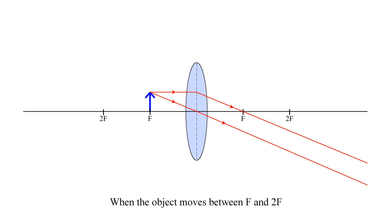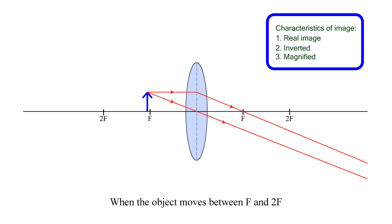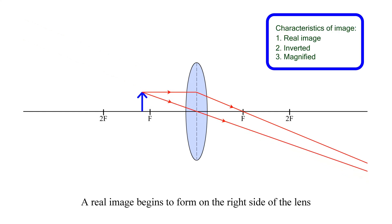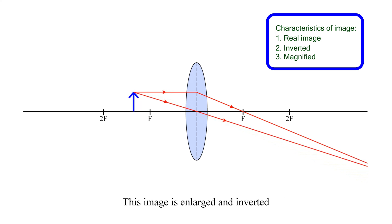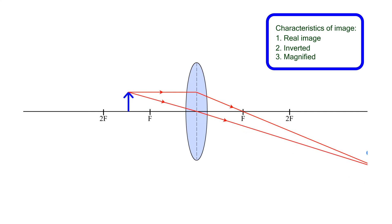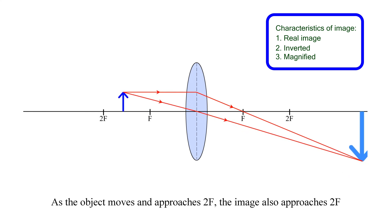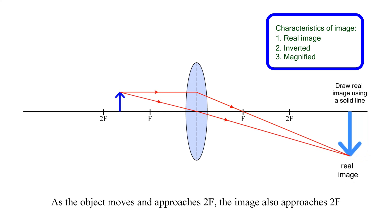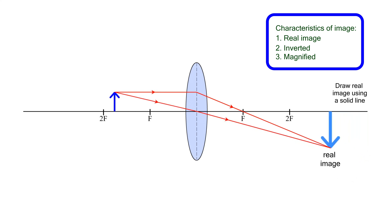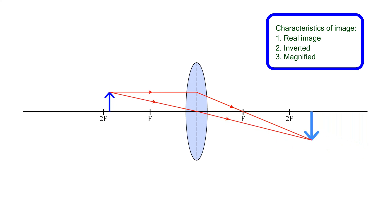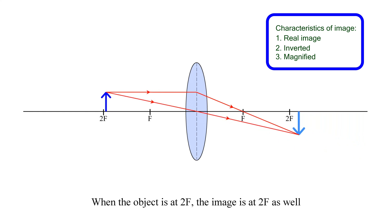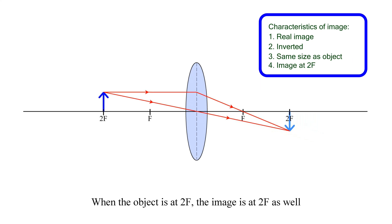When the object moves beyond F and toward 2F, a real image begins to form on the right side of the lens. This image is enlarged and inverted. As the object moves and approaches 2F, the image also approaches 2F. When the object is at 2F, the image is at 2F as well, and the size of the image is equal to the size of the object.